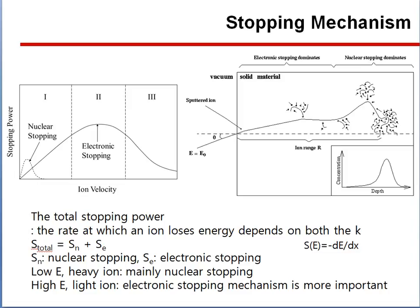The total stopping power is the rate at which an ion loses energy, and depends on both nuclear and electronic stopping: S_total equals S_n plus S_e.